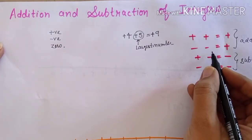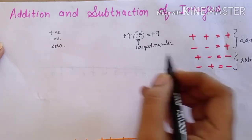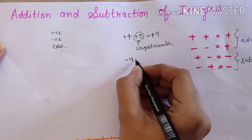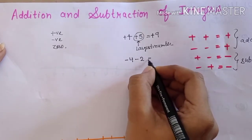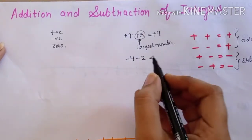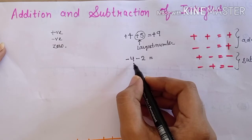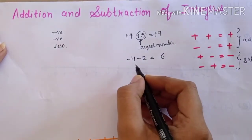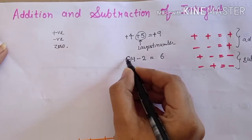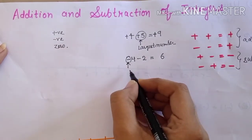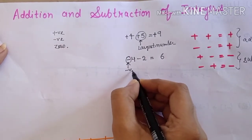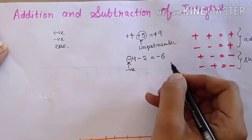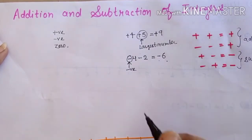Next example minus-minus की। Suppose minus 4 और minus 2। Same sign है, तो add करेंगे: 4+2=6। लेकिन sign largest number का use करेंगे। Largest number 4 है, उसका sign minus है, तो answer होगा negative 6।